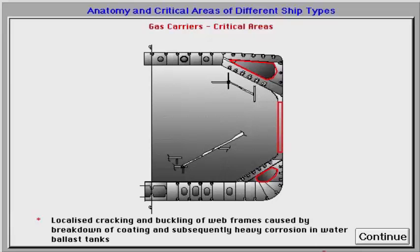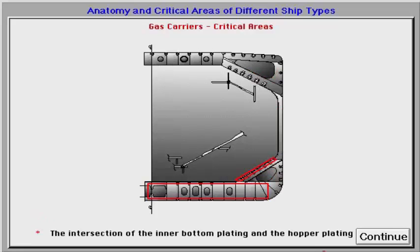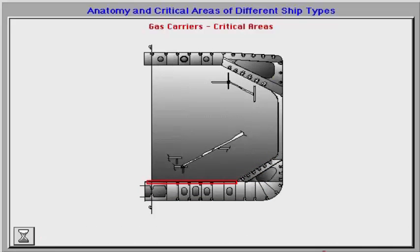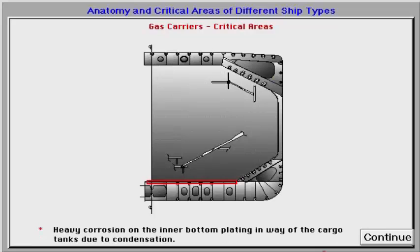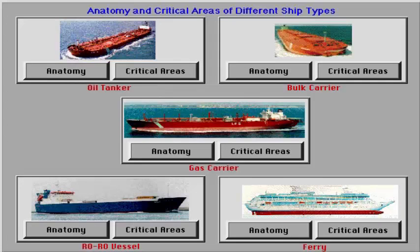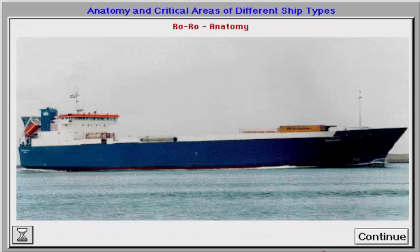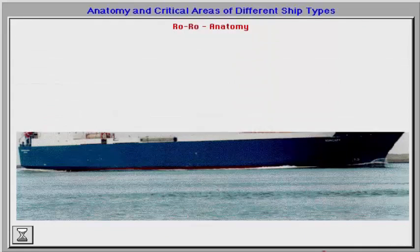Additional problem areas for gas carriers include localised cracking and buckling of web frames caused by breakdown of coating and subsequently heavy corrosion in water ballast tanks; the intersection of the inner bottom plating and the hopper plating; and heavy corrosion on the inner bottom plating in way of the cargo tanks due to condensation.